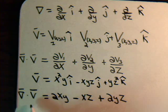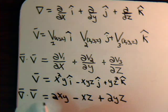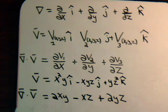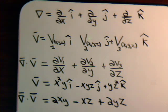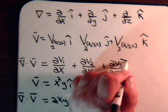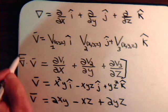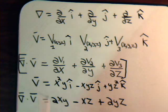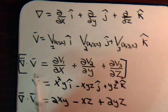As we'll see in future videos, the divergence of the vector does have special physical significance, and we'll delve into that in future videos. What we want to remember for this video is the general expression for the divergence of a vector: del dot v.